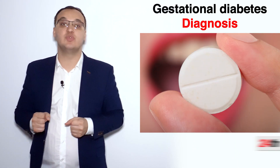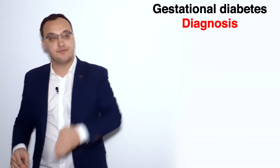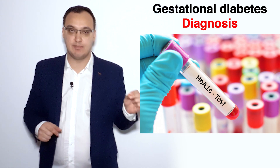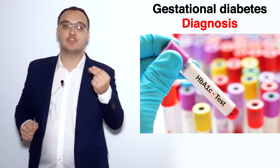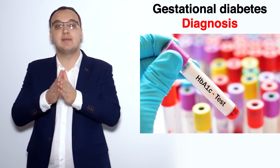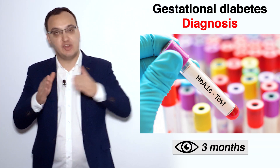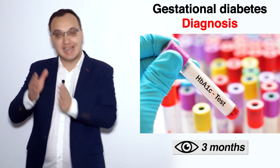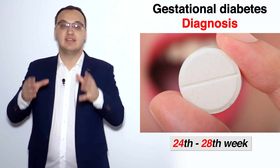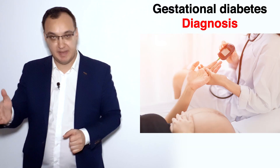The oral glucose tolerance test is done between 24 and 28 weeks of pregnancy. To summarize the two screening steps: at the first prenatal visit we check hemoglobin A1c, which is glycated hemoglobin reflecting average glucose over the past three months. Then at 24 to 28 weeks we perform the oral glucose tolerance test. If positive, we treat the patient.